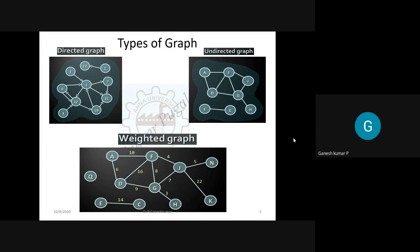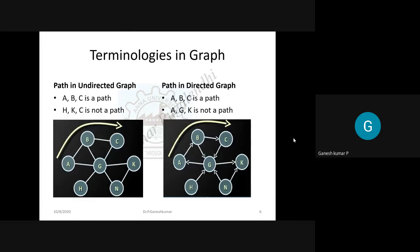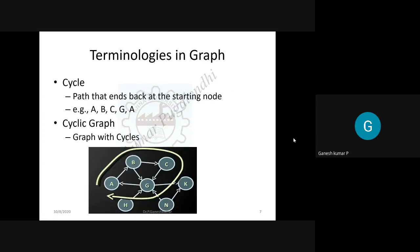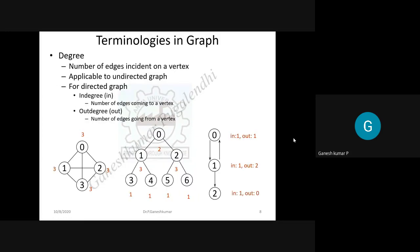Each kind of graph has its own diagram and associated terminologies such as path and cycle. Based on the cycle, graphs may be cyclic or acyclic. For a directed graph, the degree is defined as in-degree and out-degree — the number of edges coming into a vertex and the number of edges going out from a vertex.